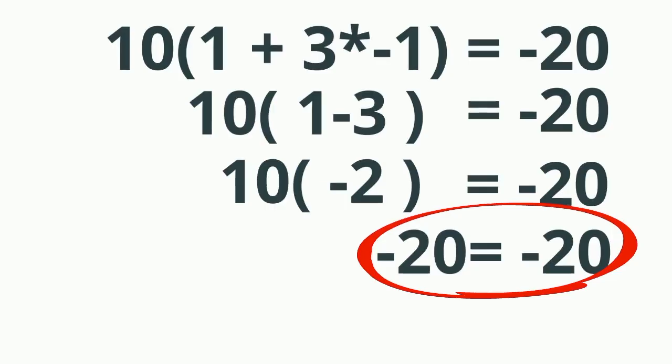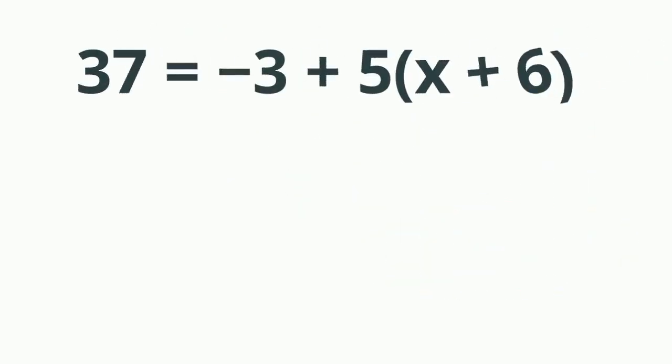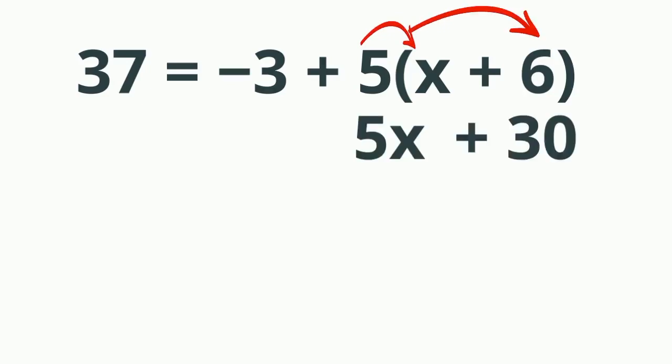For our last problem, 37 equals negative 3 plus 5 in parentheses x plus 6. What I'll do first is distribute the 5. So 5 times x is 5x, 5 times 6 is 30. Bring everything down.